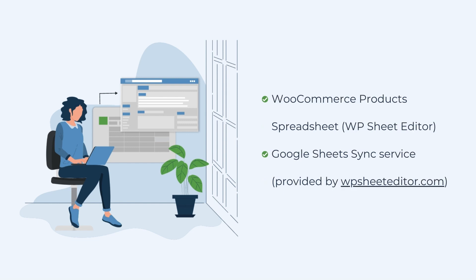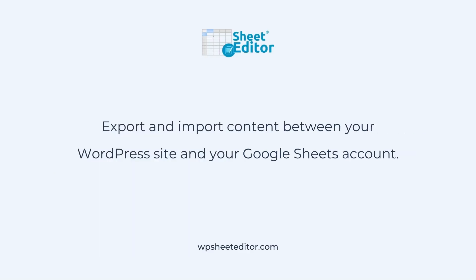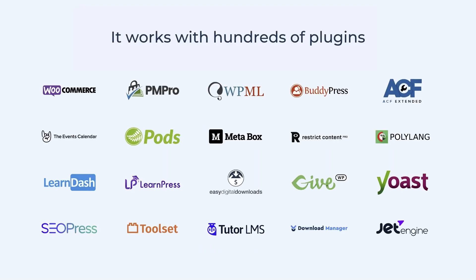For this, we will use the WooCommerce products spreadsheet plugin by WP Sheet Editor and the Google Sheet Sync service, provided by WPSheeteditor.com. This service allows you to export and import content between your WordPress site and Google Sheets. You can use it with all WP Sheet Editor spreadsheets, so you can automate the management of any post type using Google Sheets. This includes exporting and importing custom fields and fields from third-party plugins such as multilingual plugins.